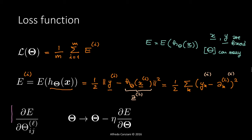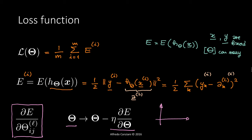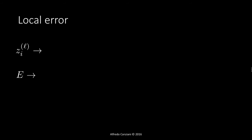The mean square error can also be written as one half summation over k of (y_k minus a_k of layer L) squared. We want to keep in mind that E is a function of the output of our network, where x and y are fixed and Theta can vary. Our goal is to find the rate of variation of our error when changing a given parameter Theta_ij of layer L, so that we can move from the current evaluation of the error towards a point going down the slope in parameter space — moving towards the minimum of our cost function.